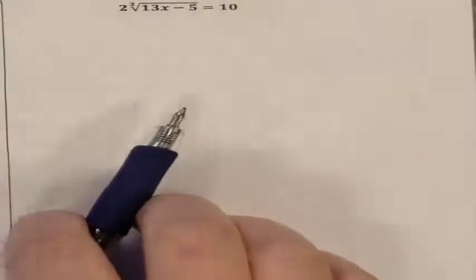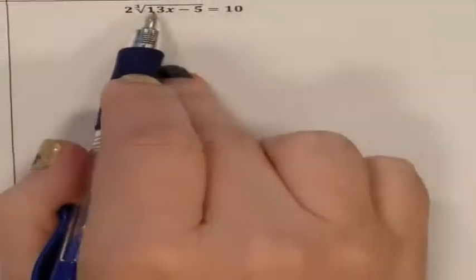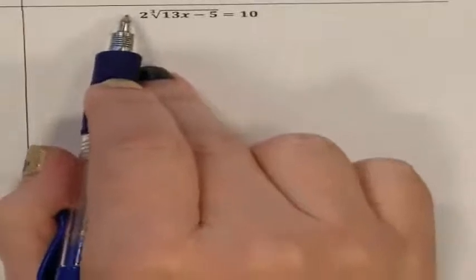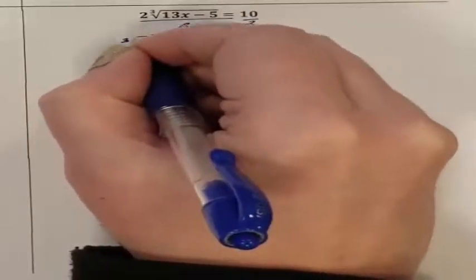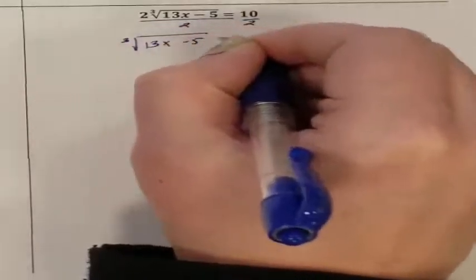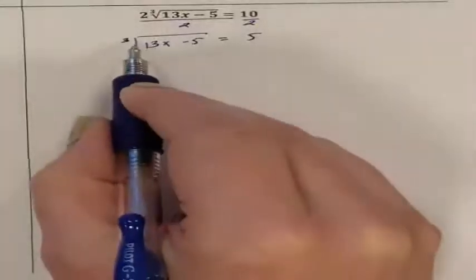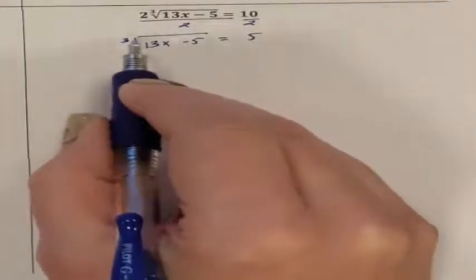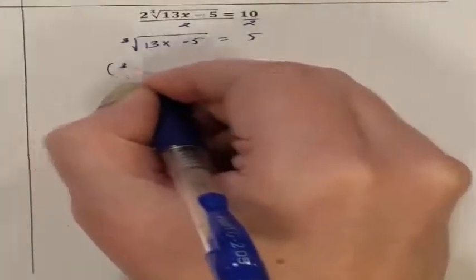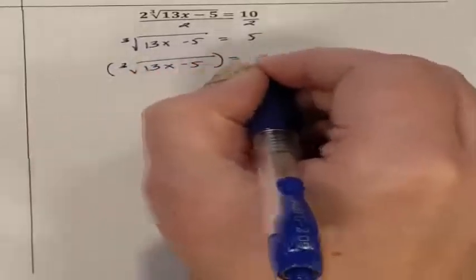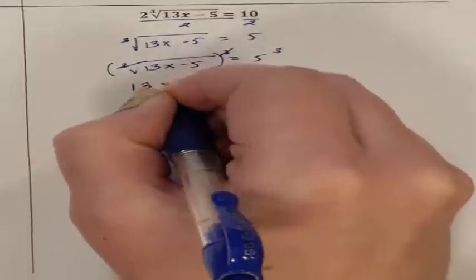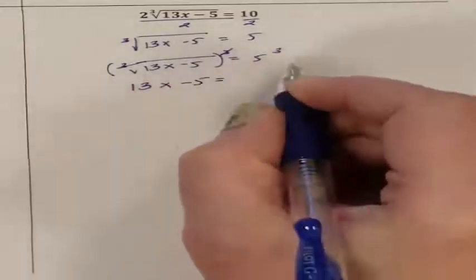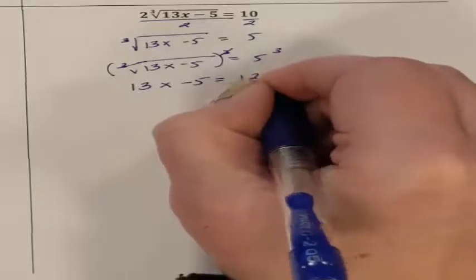Let's go ahead and solve this problem. I cannot get into the third root radical until this multiplied 2 goes away. So I'm going to divide both sides by 2. So I get the third root of 13x minus 5 equaling 5. Now I need to get in here. To get into the third root, I need to raise everyone to the third power. The third root and the third power cancel each other out. So I'm left with 13x minus 5 equaling 5 to the third power is 125.